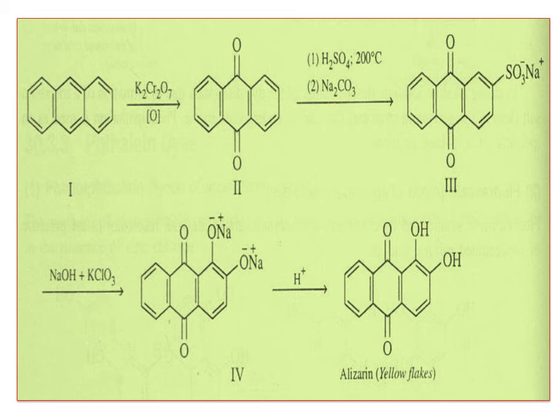All these reactions you have studied in your lower classes. Anthracene — oxidation using acidified K2Cr2O7 — gives anthraquinone. Sulfonation gives the corresponding sodium salt of sulfonic acid. Potassium chlorate is used to add the corresponding -OH groups. Hydrolysis gives the disodium salt of alizarin. H+ is added to give alizarin, which will be yellow.